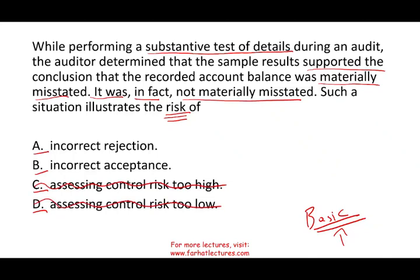You're down to two options: incorrect rejection or incorrect acceptance. What happened here is you concluded that the amount is materially misstated — the account, whether it's accounts receivable or inventory, is not good. But in reality, the account is not materially misstated. So what did you do? You did an incorrect rejection. Incorrect acceptance is the opposite — when you concluded it's not materially misstated, but it was materially misstated. Here, you rejected the amount while in reality it was not materially misstated.